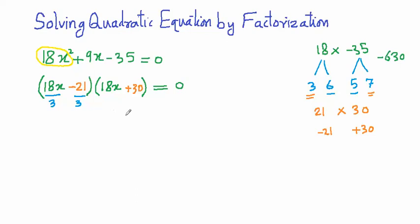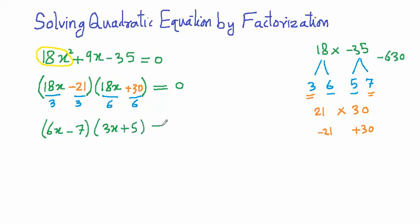We divide one bracket by 3 and the other by 6, since 6 × 3 = 18, meaning overall we have divided by 18. So the first bracket gives 18/3 = 6x - 7, and the second bracket gives 18/6 = 3x + 5. These are the two factors of 18x² + 9x - 35.